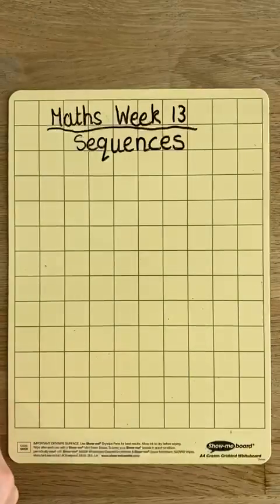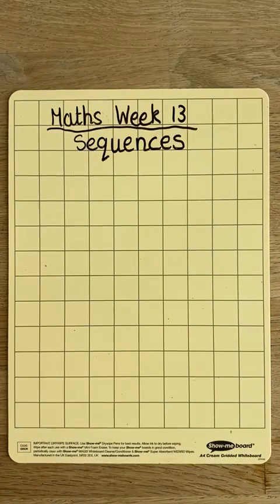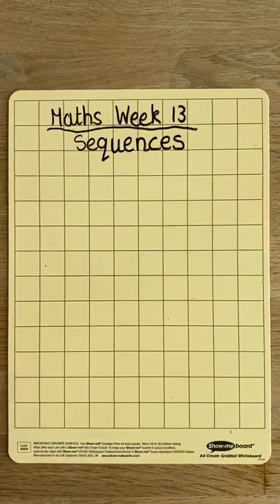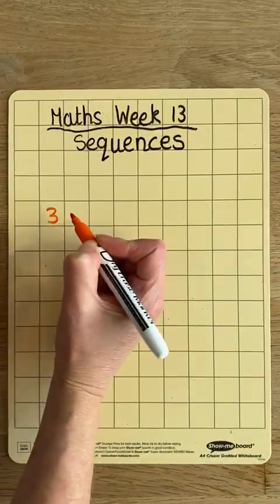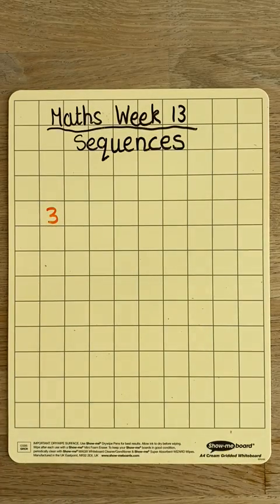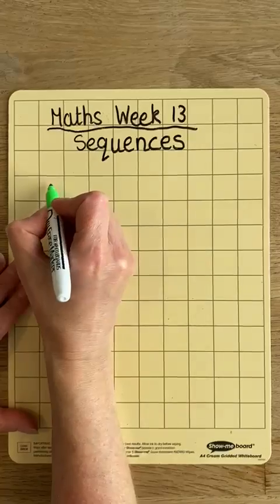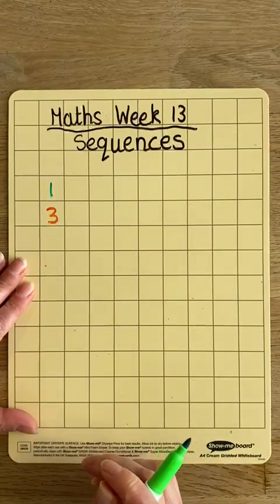So let's have a look how that works. We're going to use the information from the question, and we're told a sequence begins with 3. So we know that our sequence starts with 3, and we know that that's our first term, because we're told it's the first number in the sequence.